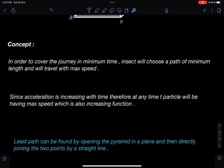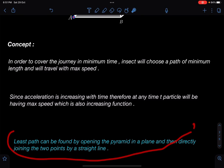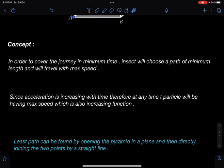The least path can be found by opening the pyramid in the plane and then directly joining the two points by a straight line. This is the concept I taught you in class and on the channel. This is a new application.